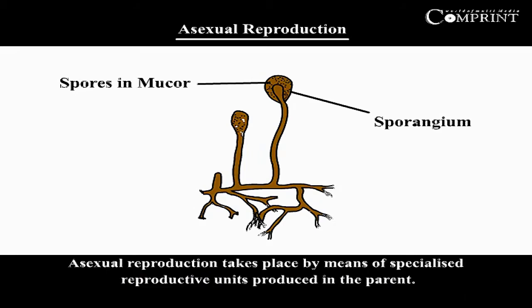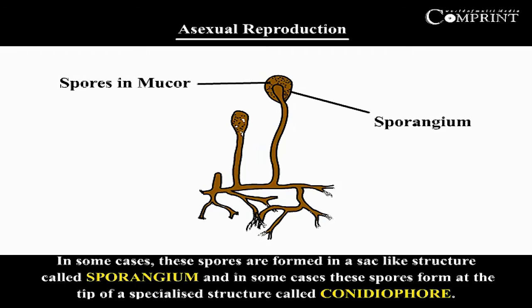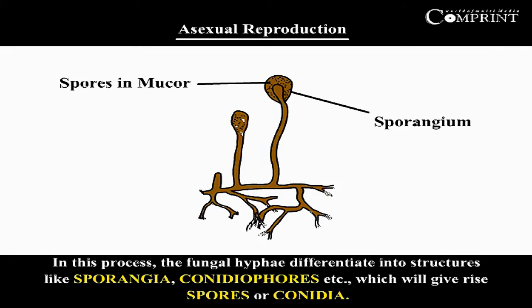Asexual reproduction takes place by means of specialized reproductive units produced in the parent. In some cases, these spores are formed in a structure called sporangium, and in some cases these spores form at the tip of a specialized structure called conidiophore. In this process, the fungi hyphae differentiate into structures like sporangia and conidiophores, which give rise to spores or conidia.